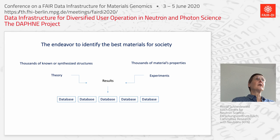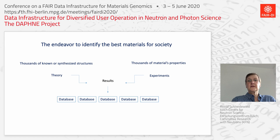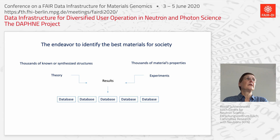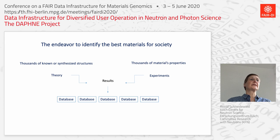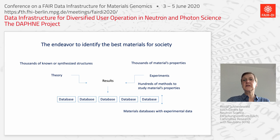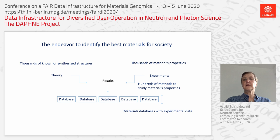As tax-paid scientists, we are all requested to propose, provide, and identify the best materials for the needs of society. There are thousands of known and newly synthesized materials with thousands of material properties investigated by experimental and theoretical methods. From the experimental point of view, we have hundreds of different methods for material properties, provided by hundreds of different experimental stations and equipment, which are partially commercially provided with their own data formats and software for analysis.